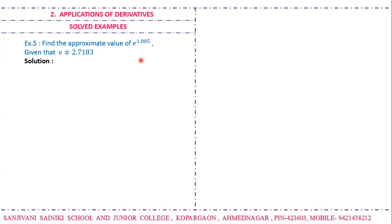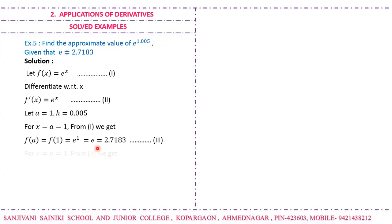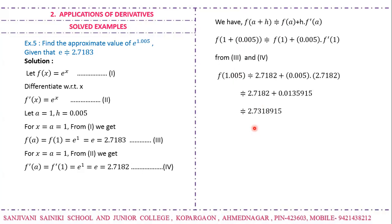The next example: find the approximate value of e^1.005, where e = 2.7183. The function is f(x) = eˣ, whose derivative is also eˣ. We choose a = 1 and h = 0.005. At x = 1, f(a) = e = 2.7183 and f'(a) = e = 2.7183. Using the approximation formula f(a+h) ≈ f(a) + h·f'(a), we get the approximate value as 2.7318915. So e^1.005 ≈ 2.7318915.